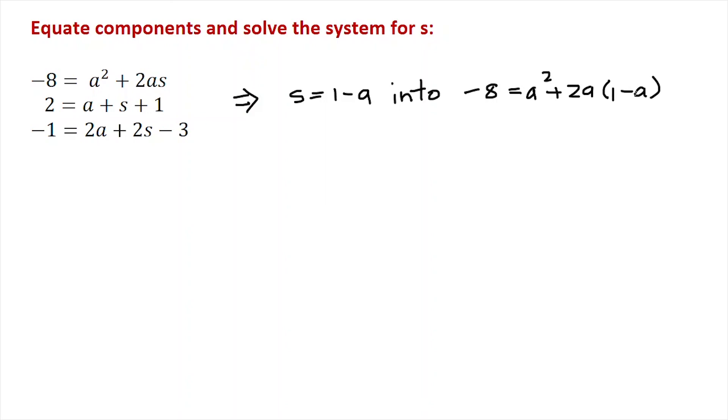And then I'll have an equation all in a. When I solve that equation, I'm going to get a² - 2a - 8 = 0. And of course, I can factor that. That factors to be (a - 4)(a + 2) = 0.